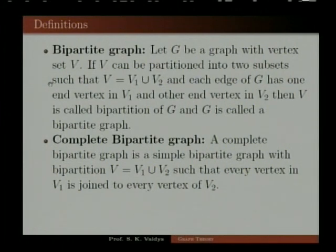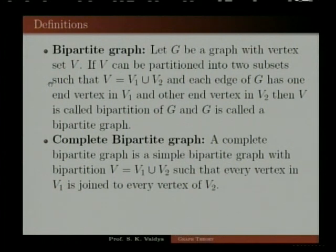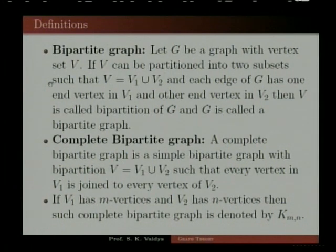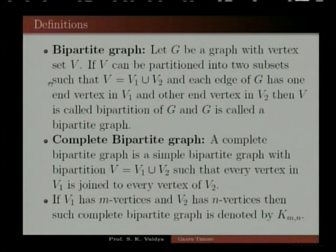A complete bipartite graph is a simple graph — that is, a graph without loops or multiple edges. It is a simple bipartite graph with bipartition V equal to V1 union V2 such that every vertex in V1 is joined to every vertex of V2. If V1 has m vertices and V2 has n vertices, such a complete bipartite graph is denoted by Kmn.